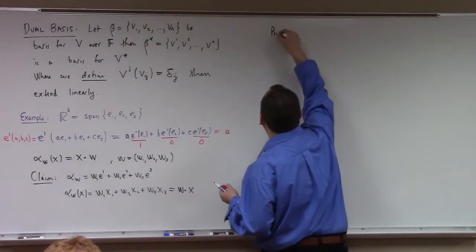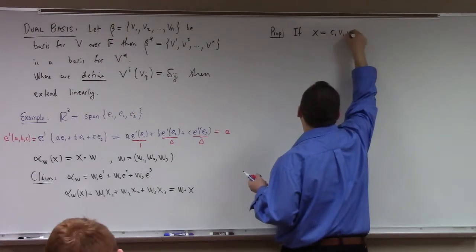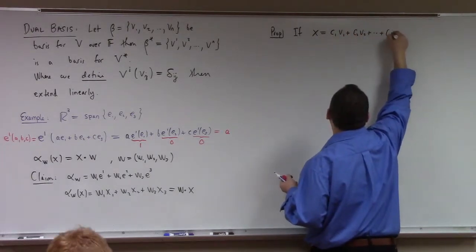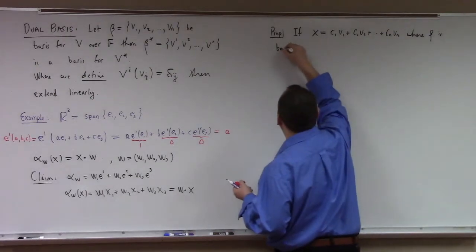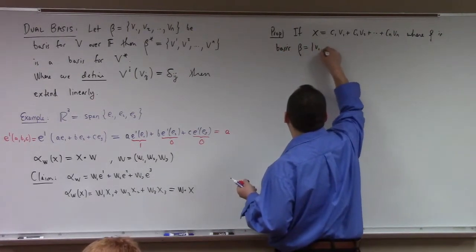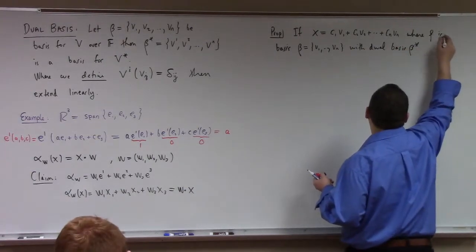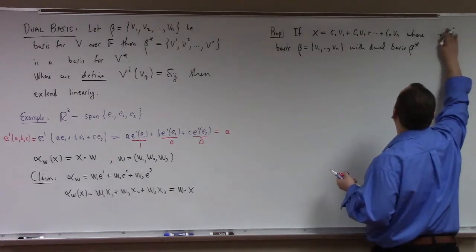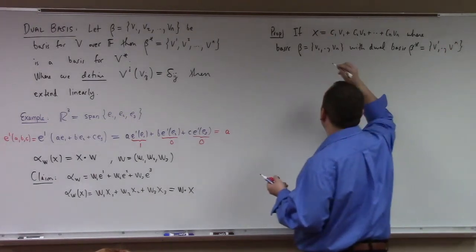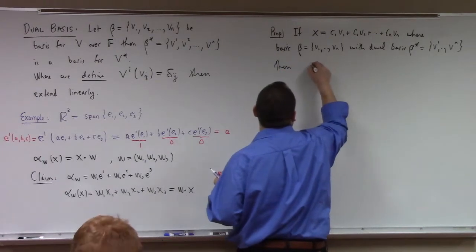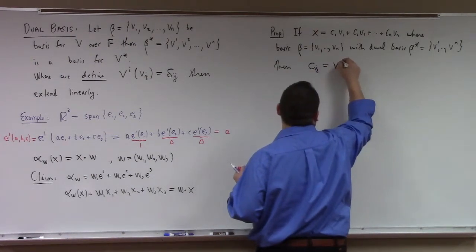So it's a kind of weird new notation with upper subscripts, but here's the fundamental proposition. If x equals c₁v₁ + c₂v₂ + ··· + cₙvₙ, where beta is a basis with dual basis beta-star as we've been discussing, then c_j is nothing more than v^j acting on x.